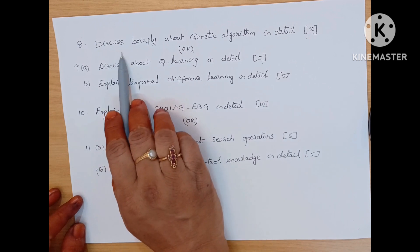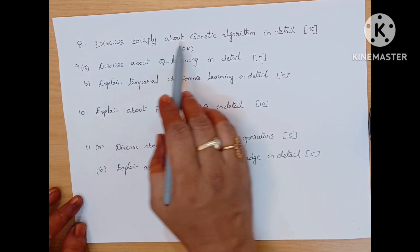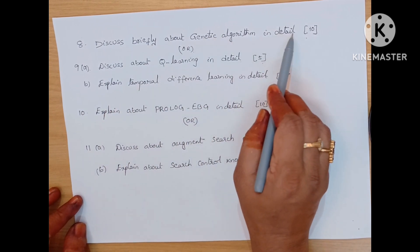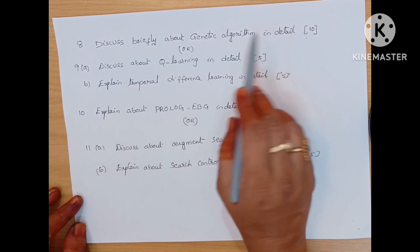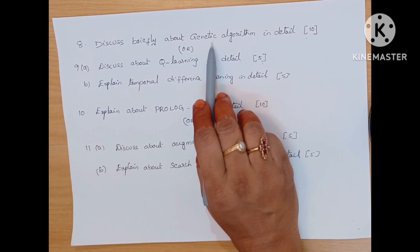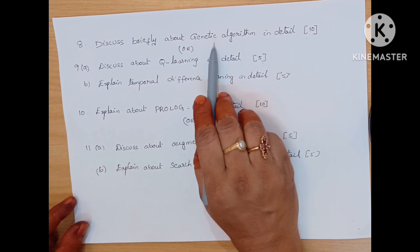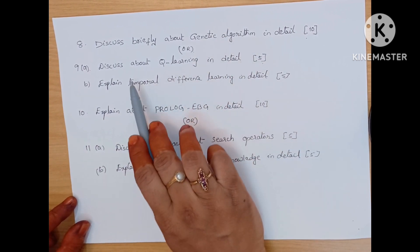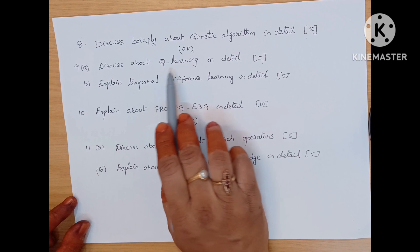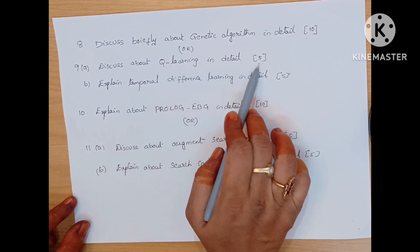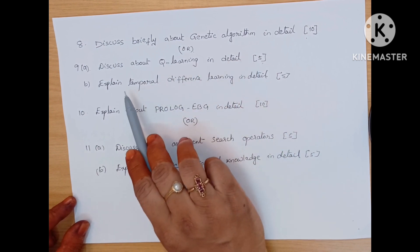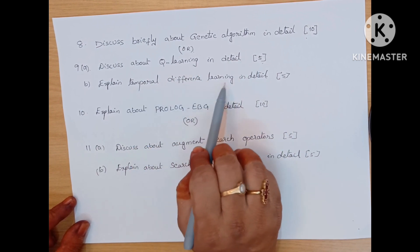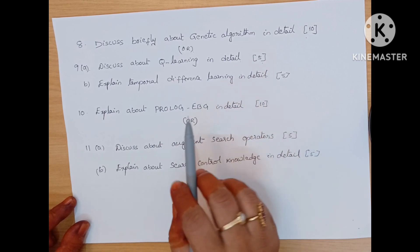Unit 4 questions: discuss briefly about genetic algorithm in detail, 10 marks. The same word 'genetic' came for a short answer question also. Or, the internal choice is discuss about Q-learning in detail, 5 marks, and explain temporal difference learning in detail, 5 marks.